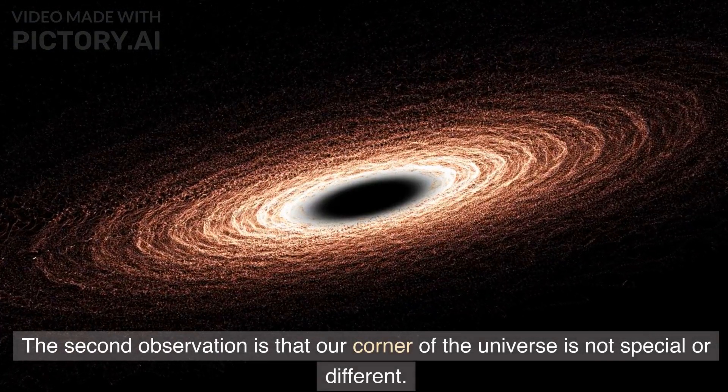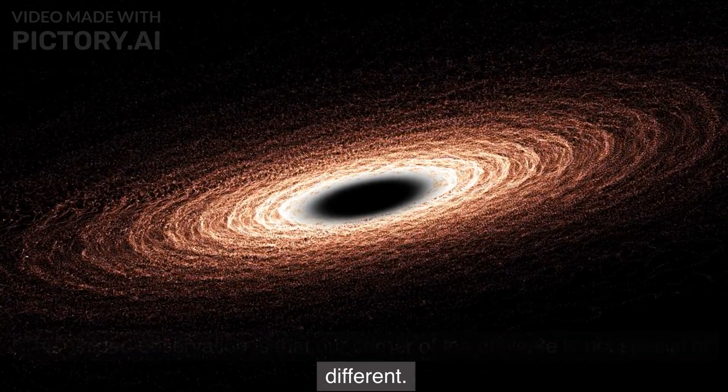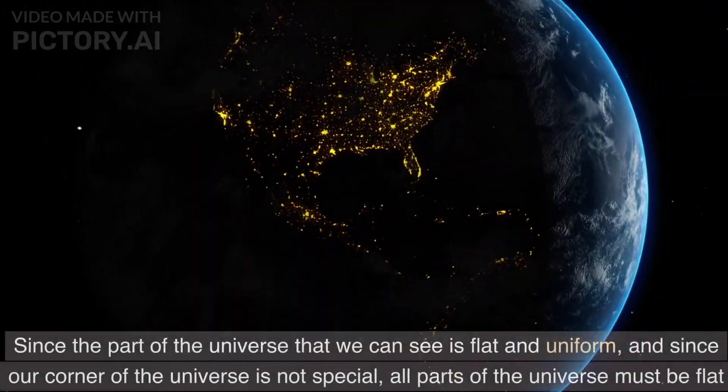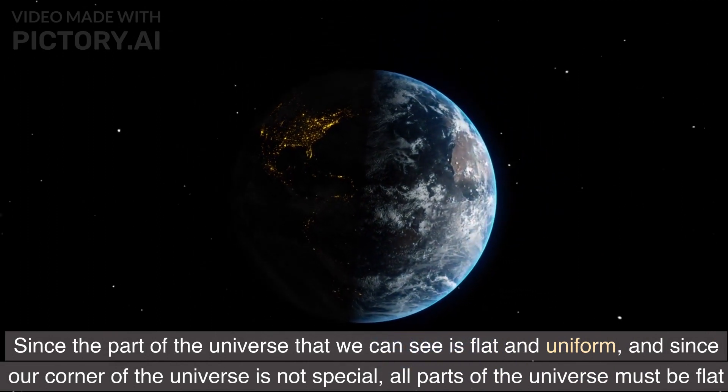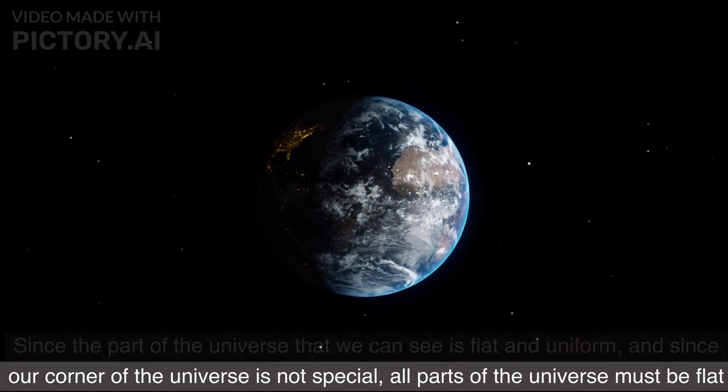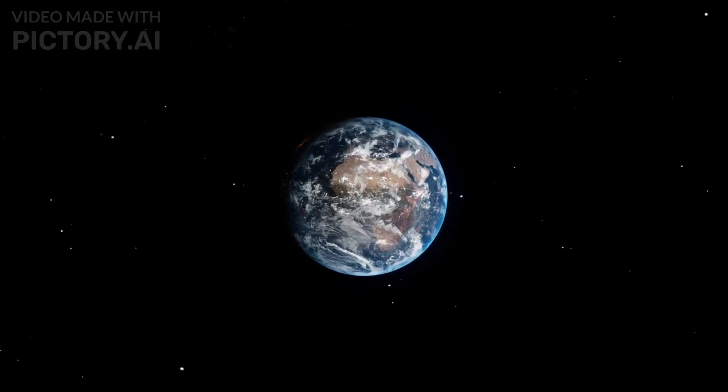The second observation is that our corner of the universe is not special or different. Since the part of the universe that we can see is flat and uniform, and since our corner of the universe is not special, all parts of the universe must be flat and uniform.